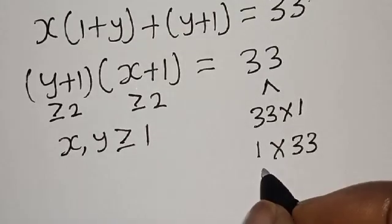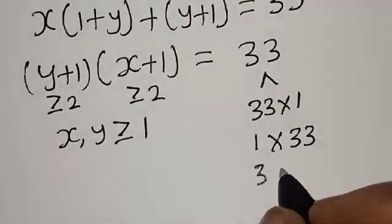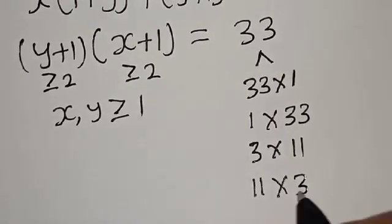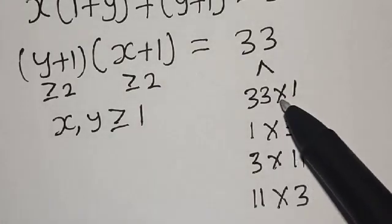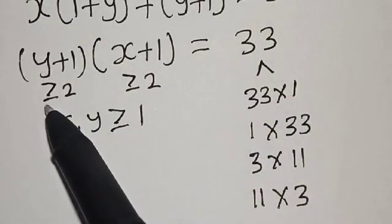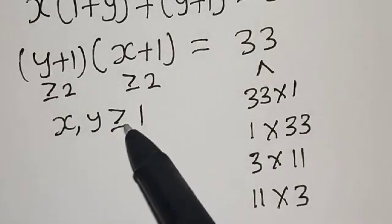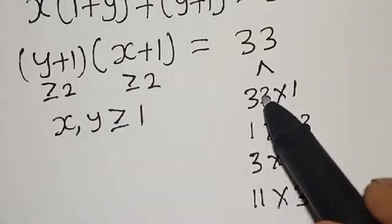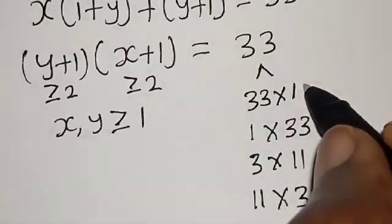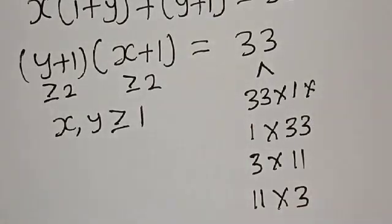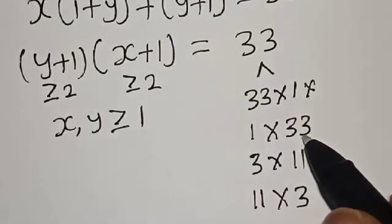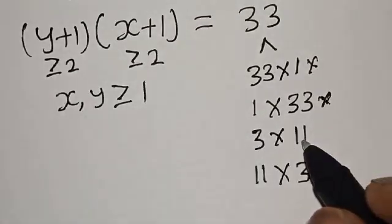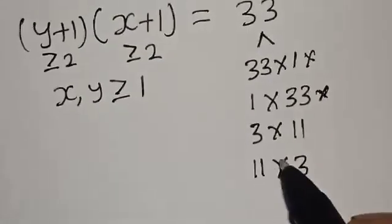Now 33 can be rewritten as: 33 times 1, or 1 times 33, or 3 times 11, or 11 times 3. Since x and y are greater than or equal to 1, both factors must be greater than or equal to 2. So 1 is less than 2, we cancel 33×1 and 1×33. We are left with 3×11 and 11×3, both valid since 3 and 11 are each greater than 2.